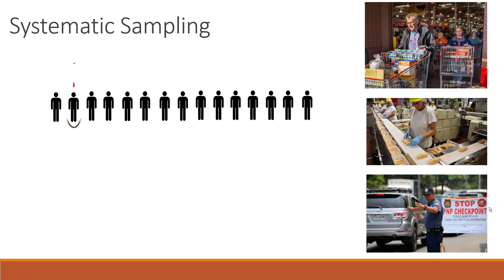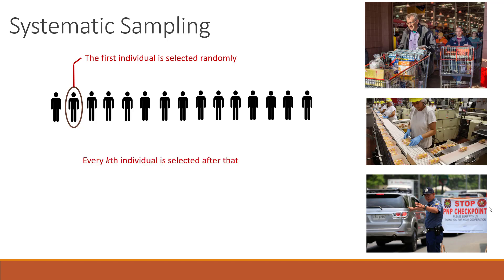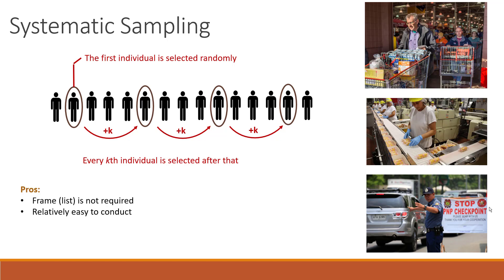Systematic sampling is often used for surveying store customers, for quality control conducted at an assembly line, or even at police checkpoints. The idea is the following: you randomly select the first individual in the population, and then, depending on the desired sample size, you select every kth individual — so it can be every second, every 10th, or every 50th, depending on how many you want in the sample. For example, it would be approaching every 10th customer that comes out of the store.